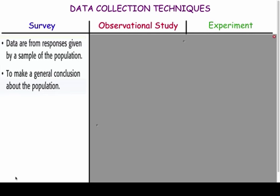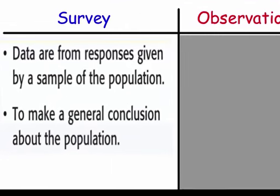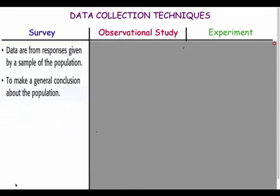We can break up the way we collect data into three categories: a survey, an observational study, and an experiment. Let's talk about the differences. A survey is responses given from a sample — you ask a question, get responses, and then make a general conclusion about the population from the sample.